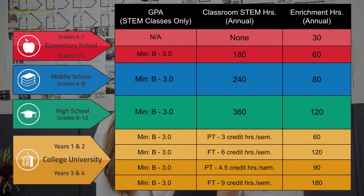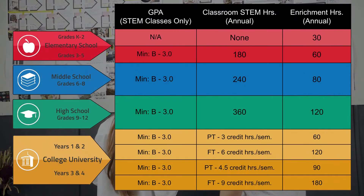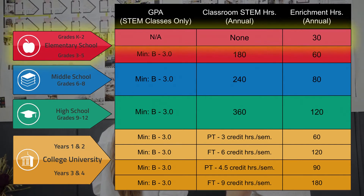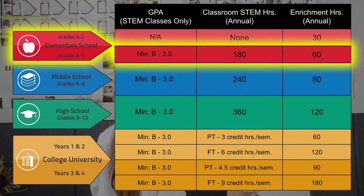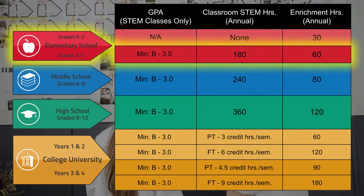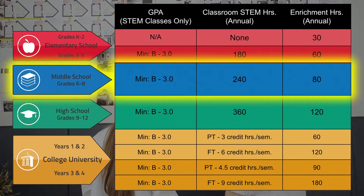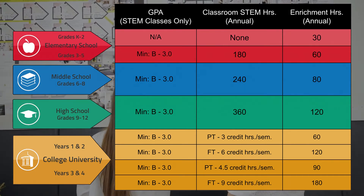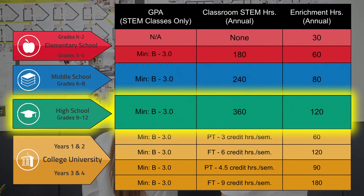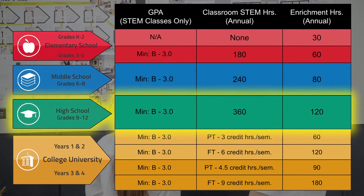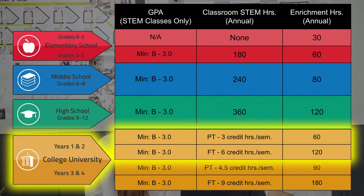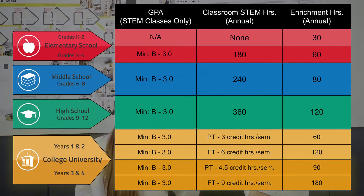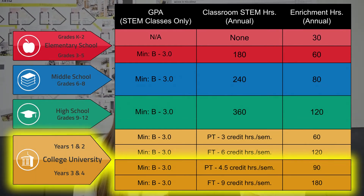Let's take a look. Elementary school: grades K-2, grades 3-5. Middle school: grades 6-8. High school: grades 9-12. College and university years 1 and 2, and years 3 and 4.